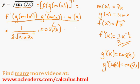Then, multiplied by m prime of x, which is just the derivative of m of x. The derivative of 7x is just 7.